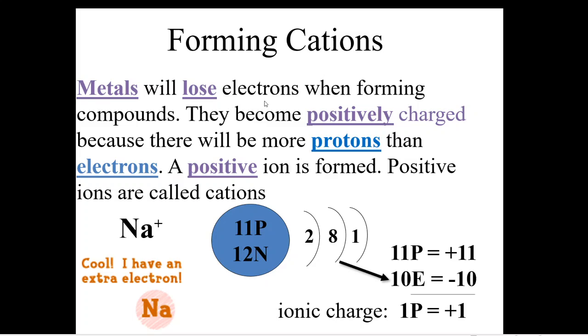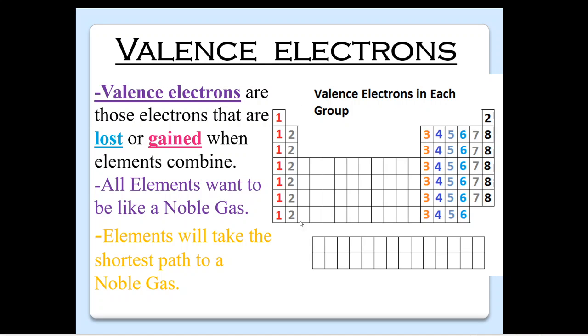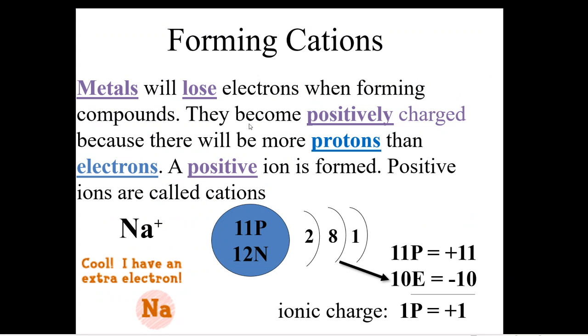Remember when we started off, we talked about the periodic table. Everything was neutral. All the atoms were neutral. Well, now we're going to learn that when they start gaining or losing electrons, when they start bonding, that's when they start being either positive or negative. And so they can form what we call cations. That's a type of ion. So the first one we call is a cation. And usually these are metals and they will lose those electrons when forming compounds. As you can see here, most of the metals are on the left side of the periodic table. They will usually lose their electrons. That's the fastest path to a noble gas. They become what we call positively charged because there are now more protons than electrons. And that's when a positive ion or a cation is formed. Positive ions are called cations.